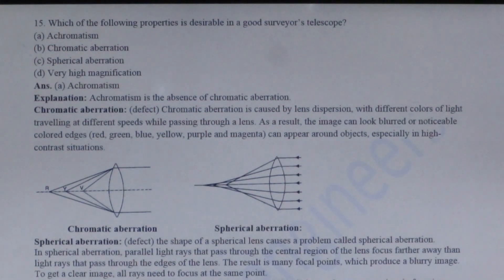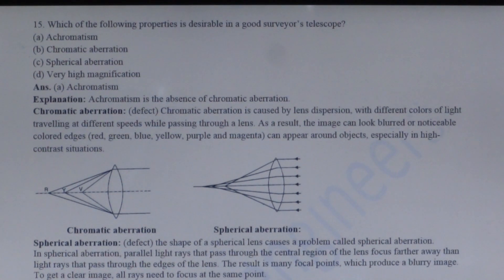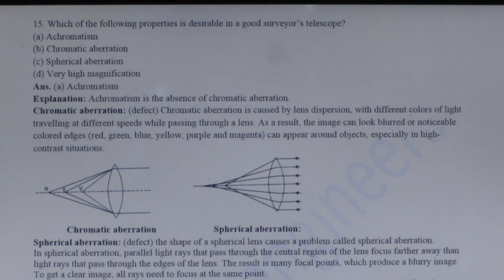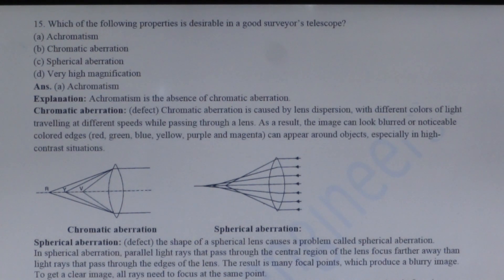Next question: Which of the following properties is desirable in a good surveyor telescope? Options: A. Achromatic, B. Chromatic aberration, C. Spherical aberration, D. Very high magnification. Very high magnification also reduces the brightness of the image and wastes more time in focusing. Therefore, option A — achromatic, meaning absence of chromatic aberration — is the desirable property of a good surveyor telescope.